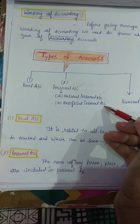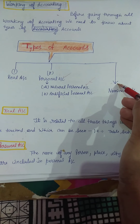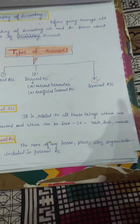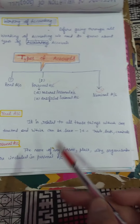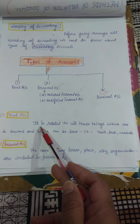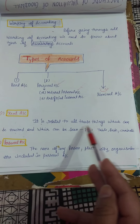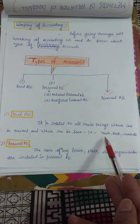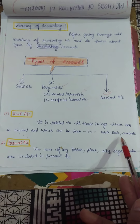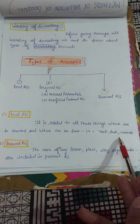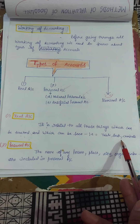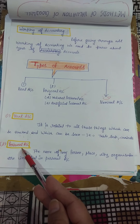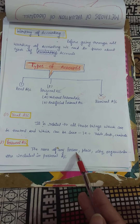Before going through the working of accountancy, we need to know about the types of accounts — these are the backbone of accounts. There are three types of accounts: first is real account, second is personal account, which has two sub-types — natural personal and artificial personal — and the third type is nominal account.